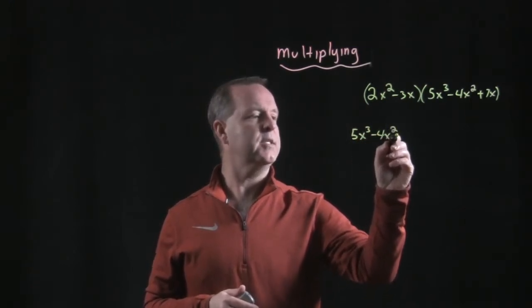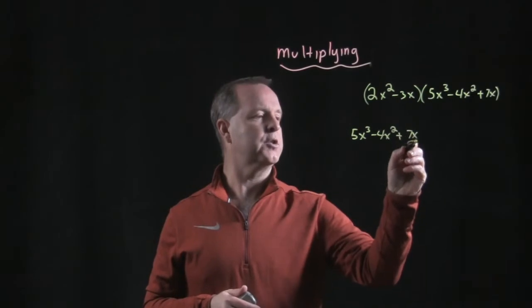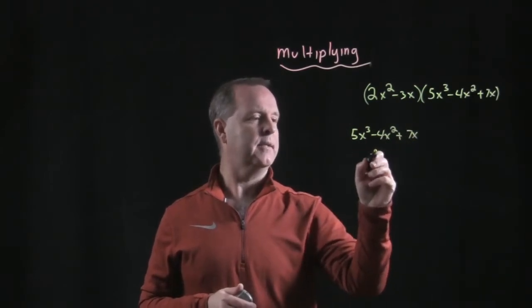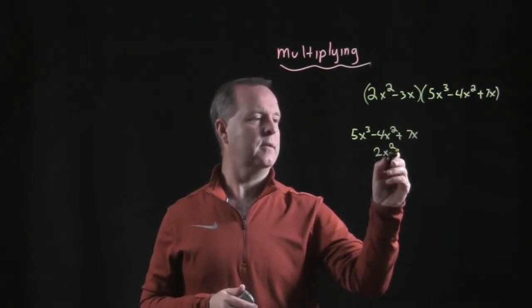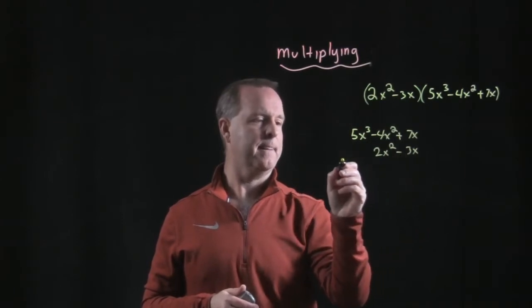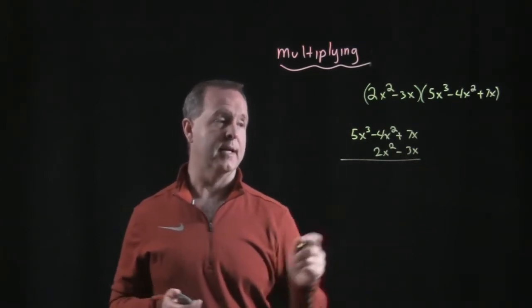Again, you don't have to, it's just easier to always put the larger term on the top. I have 2x squared minus 3x, and let's just start our process.